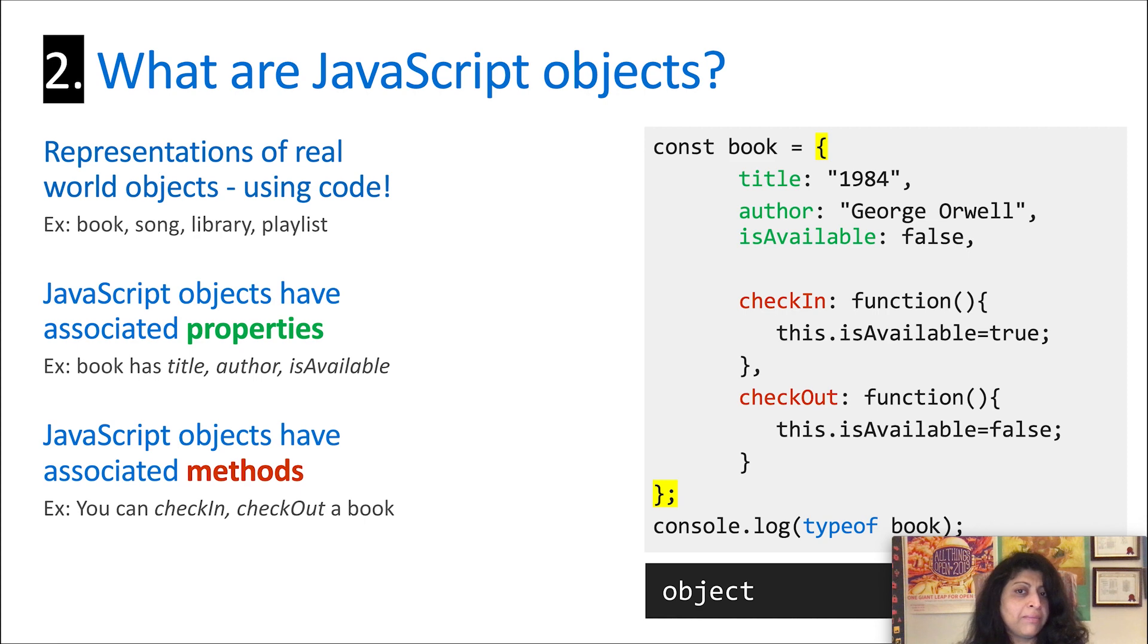So rather than attributes, we refer to them as JavaScript object properties. Properties are effectively those attributes that describe that object. So in this case, in green, this particular object called book has three properties. It has a title, an author, and a flag, a status flag that tells you if it's available. Objects also have methods similar to the actions we talked about. In this case, in red, you see that this object has two methods, check in and check out, which effectively manipulate the value associated with the availability status.